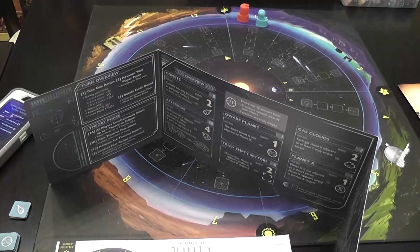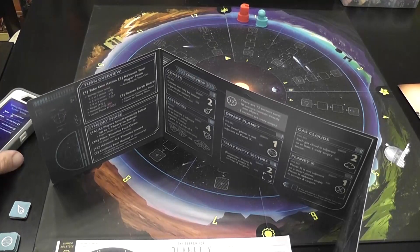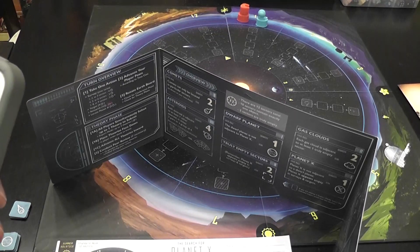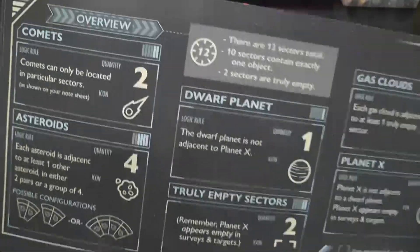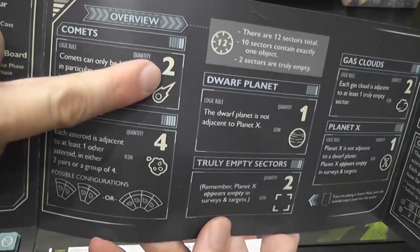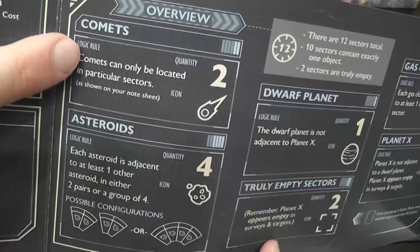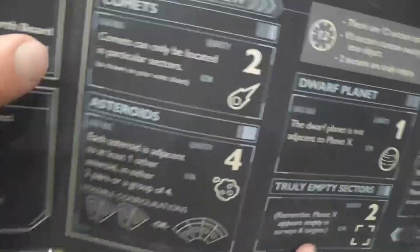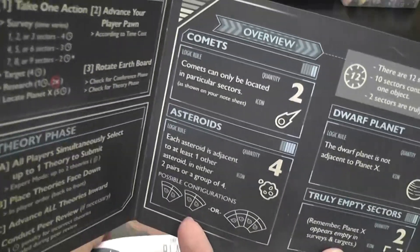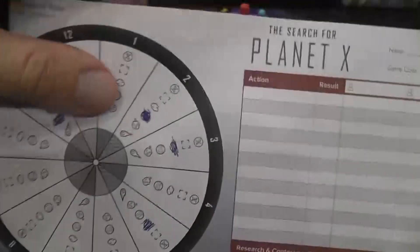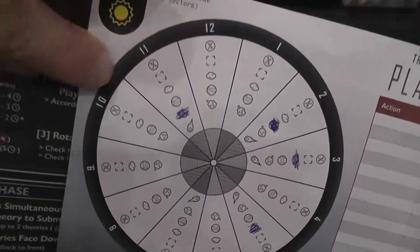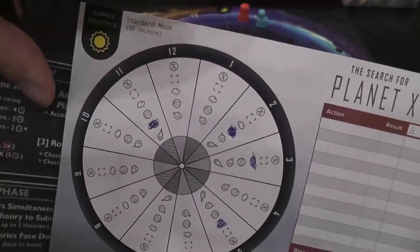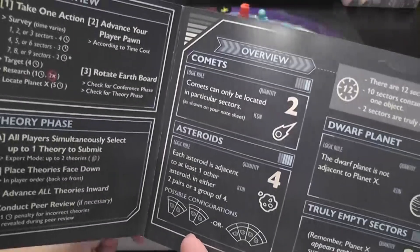Before we continue, we need to know something about the rules that regulate the actions in the game. We know here, looking at the back of the player aid, that there are two comets in the sky, and comets may only be located in particular sectors. Basically, they are in sectors with prime numbers, as indicated here. See, 3, 5, 7, and it goes to 11. On the other side, it also goes to 13 and 17.